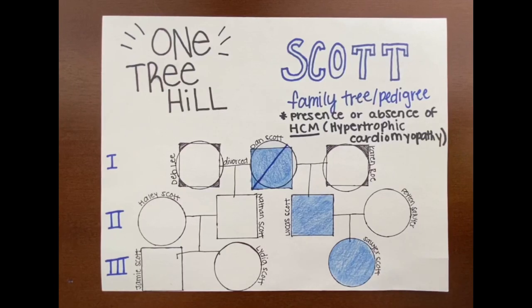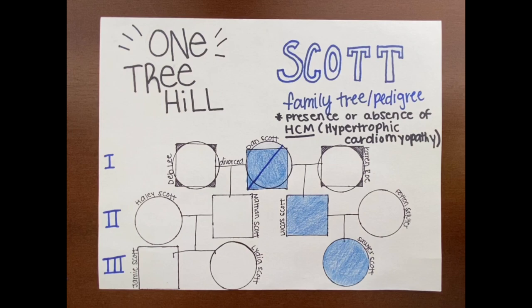In this video, I'm going to be tracing the presence and absence of the HCM trait, which is hypertrophic cardiomyopathy, in the Scott family tree from the TV show One Tree Hill. This is a real phenotype that was actually seen in the TV show and caused the death of one of the main characters, Dan Scott.